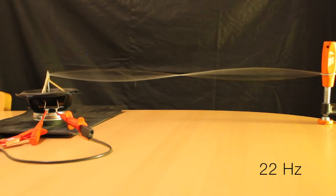At 22 Hz, and remember our first mode of vibration was 11 Hz, at 22 Hz you can see what we have here is the second mode of vibration. So this is the next frequency up that the string wants to vibrate at. 22 Hz is 2 times 11 Hz, so it's twice the frequency of the first mode of vibration.